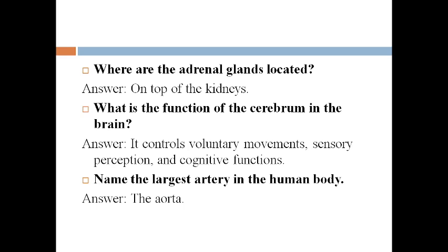The first question is: where are the adrenal glands located? On top of the kidneys. What is the function of the cerebrum in the brain? It controls voluntary movements, sensory perception, and cognitive functions. So the cerebrum controls voluntary movements, sensory perception, and cognitive functions — these are the three main functions.